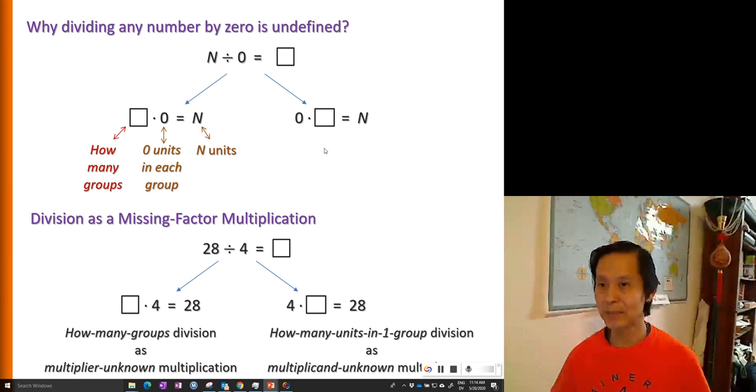Also, we can explain it using the second type of division. Here again, we want to achieve N units. But in this case, I have zero groups. No matter how many units you have in each group, if you have zero groups.